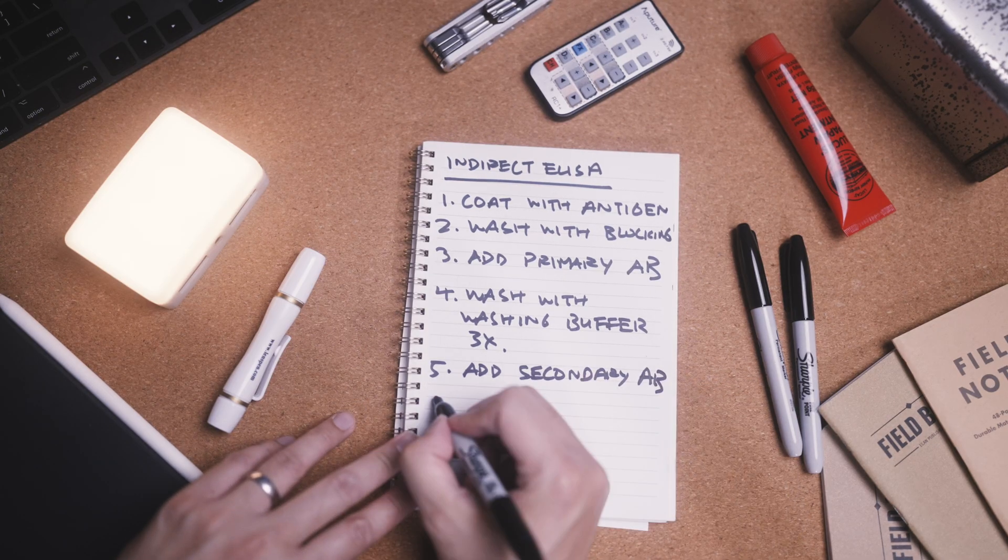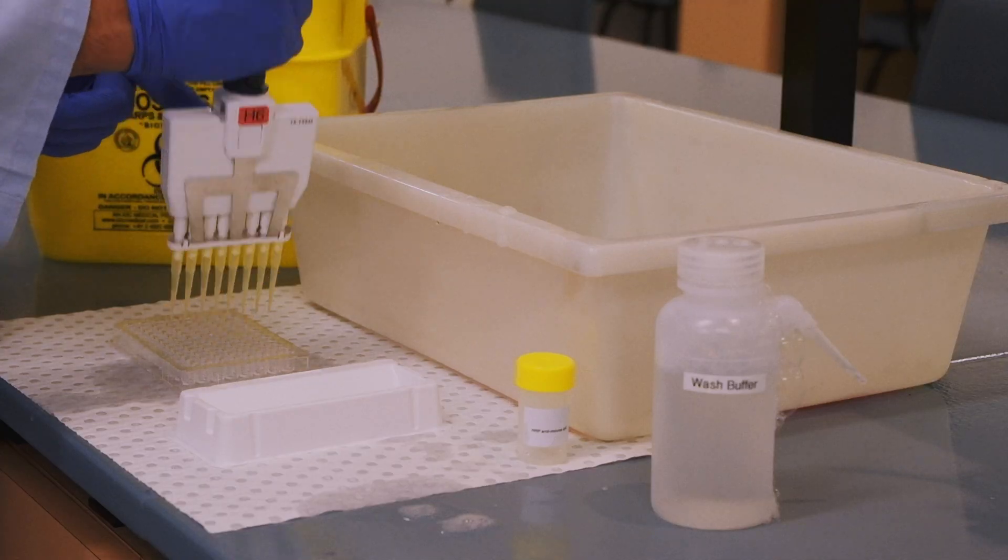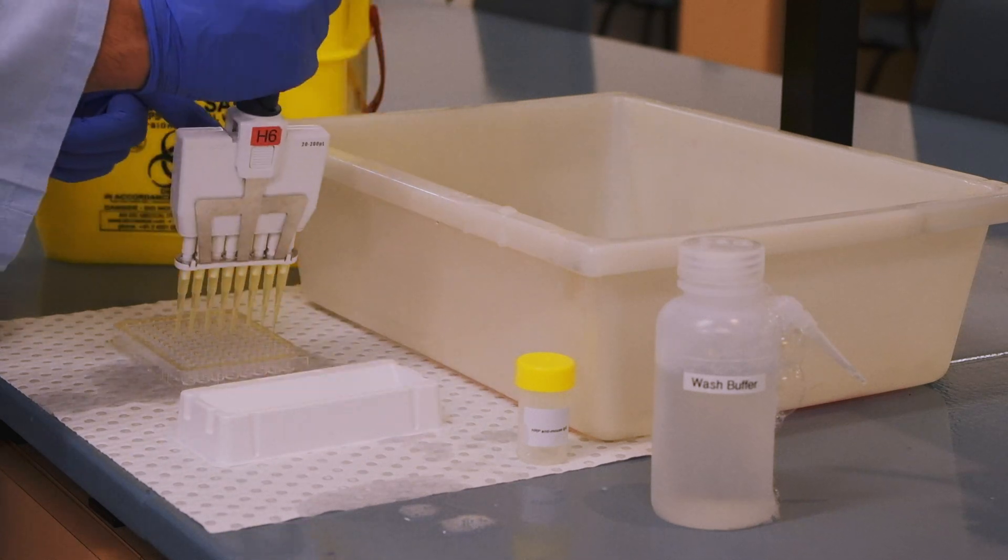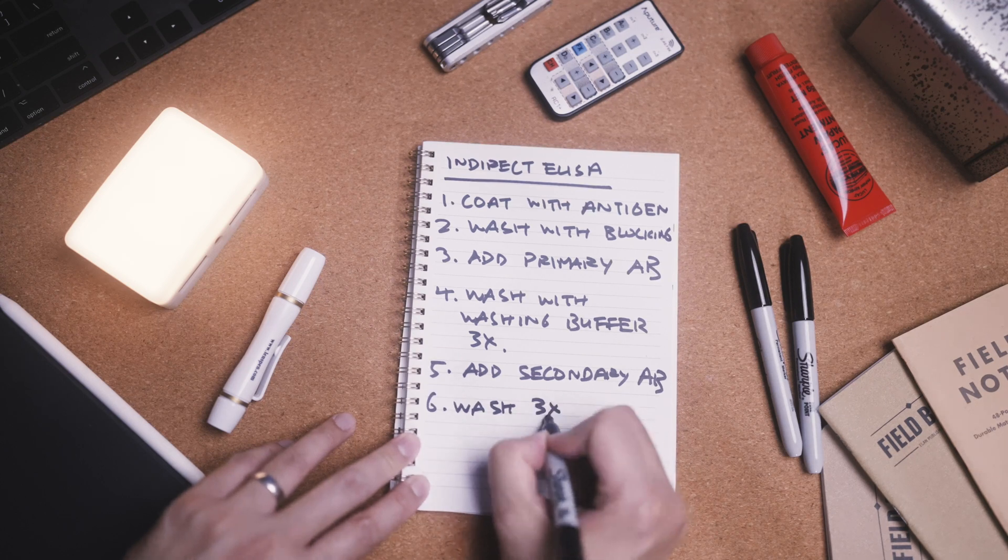Finally, add the secondary antibody to the plate, and incubate the plate for 30 to 60 minutes. This is the last step in the ELISA. However, before the substrate buffer can be added, any unbound secondary antibodies need to be washed off.